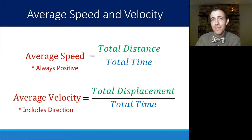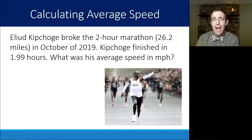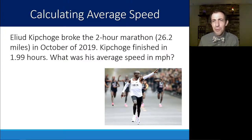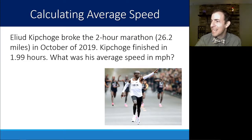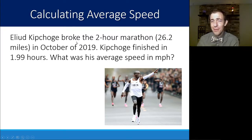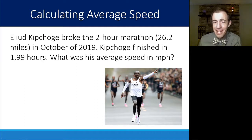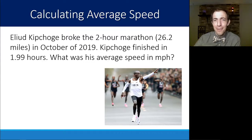Velocity is technically displacement divided by time, which means you need to find displacement first. Now, if we wanted to use this to calculate something, it's a simple equation you should be really familiar with. Last year in 2019, Eliud Kipchoge broke the record — he was the first person to ever run a sub-two-hour marathon, which is insane. We can calculate his average speed in miles per hour.